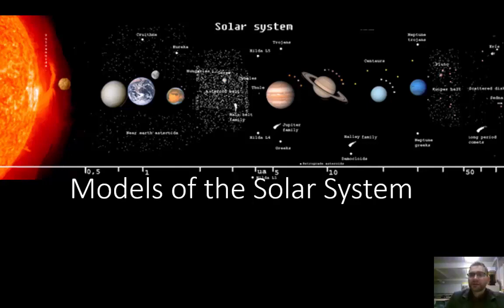This lesson is part of our astronomy unit. The title of the lesson is Models of the Solar System. We're going to talk specifically about how our ideas of thought have changed from a geocentric model of the solar system to a heliocentric model of the solar system.